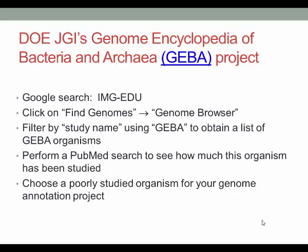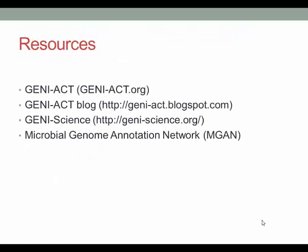There are many resources online available to start an annotation project. I propose the geniact.org website — the GENIACT bioinformatics platform brings together some of the more common bioinformatics programs into a central location. There are faculty and student resources on the GENIACT blog, as well as protocols on the GENIACT Science website for both functional and manual annotation work. If you are an instructor, the Microbial Genome Annotation Network, or MGAN, offers workshops in the use of the GENIACT platform.